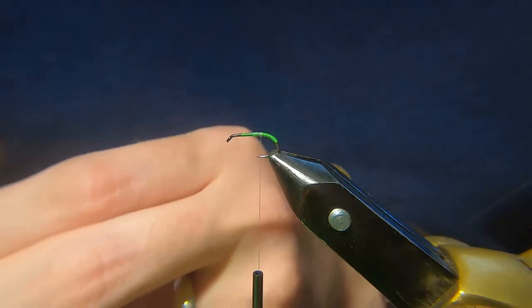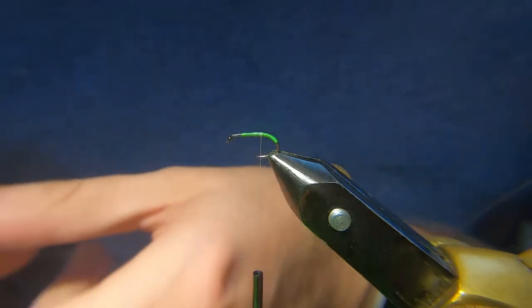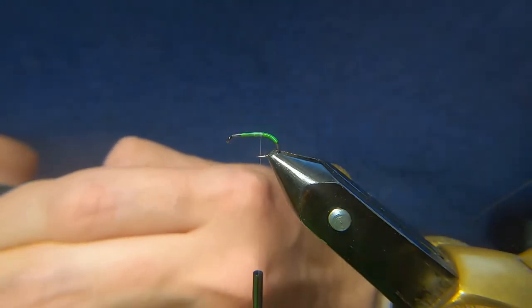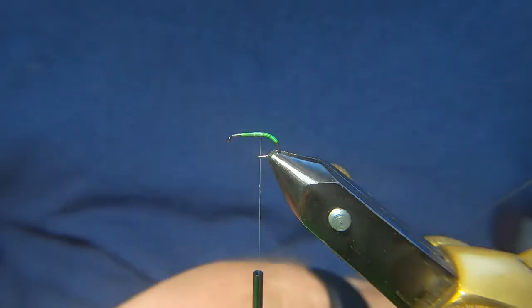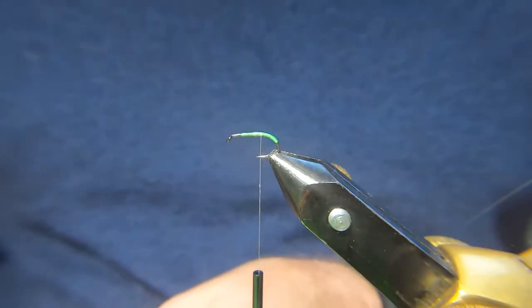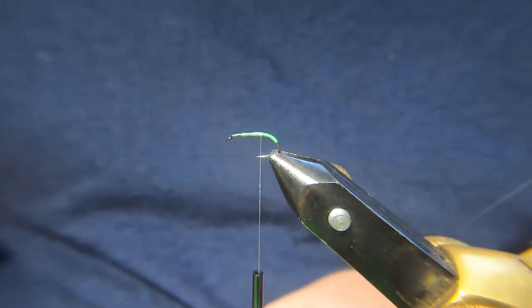You can do this in gold, I tie them up in gold and silver and sometimes I'll do a gold body with silver rib, vice versa. Just chop and change, see what works for you. Everything has its day.